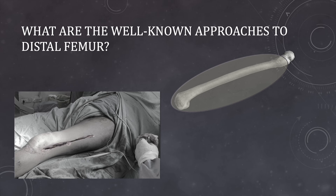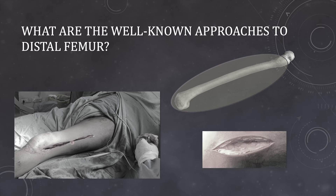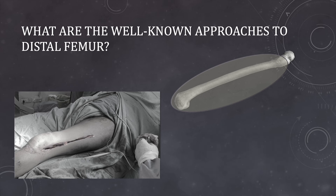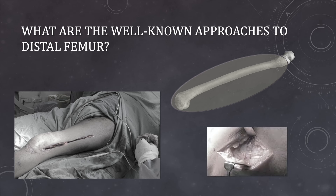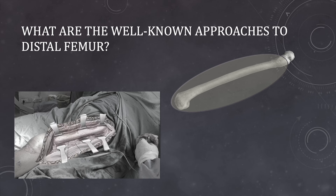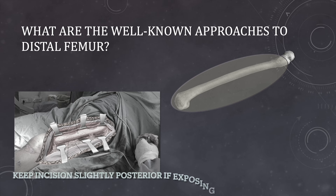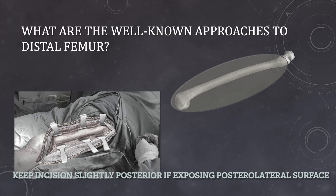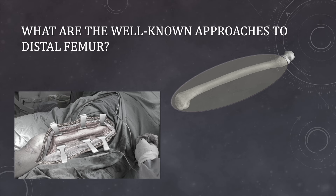For the lateral approach, we place a lateral incision, then after subcutaneous dissection we split the tensor fascia latae, which is actually confluent with the deep fascia of the thigh. After that, we expose the vastus lateralis muscle. Then we lift the vastus lateralis through the lateral intermuscular septum and retract the muscle medially. That exposes the lateral part of the femur including the distal femur, sufficient for placement of a plate or implant on the lateral aspect.